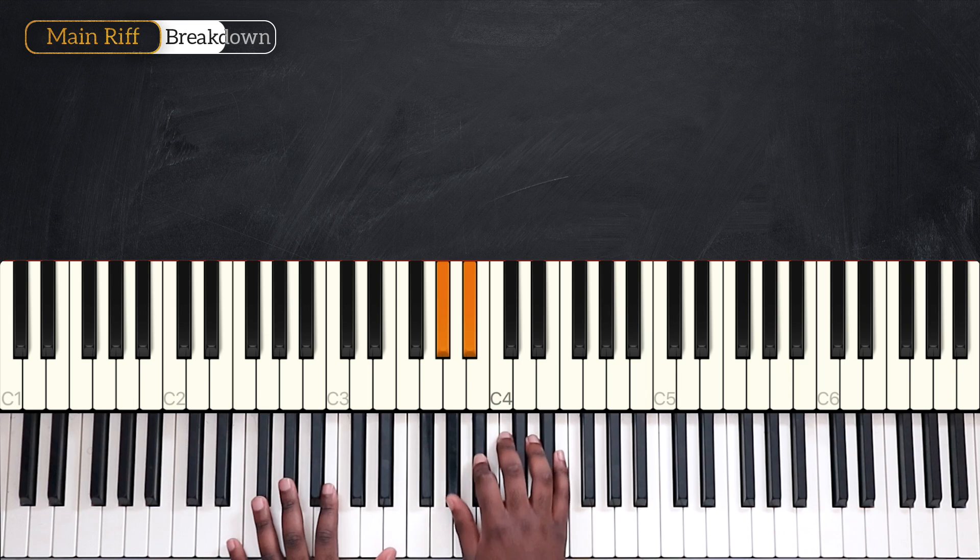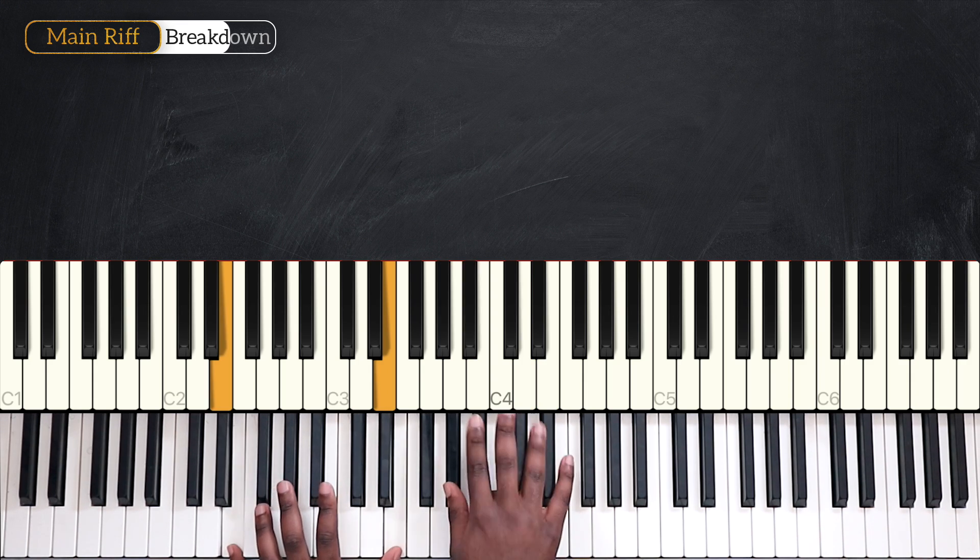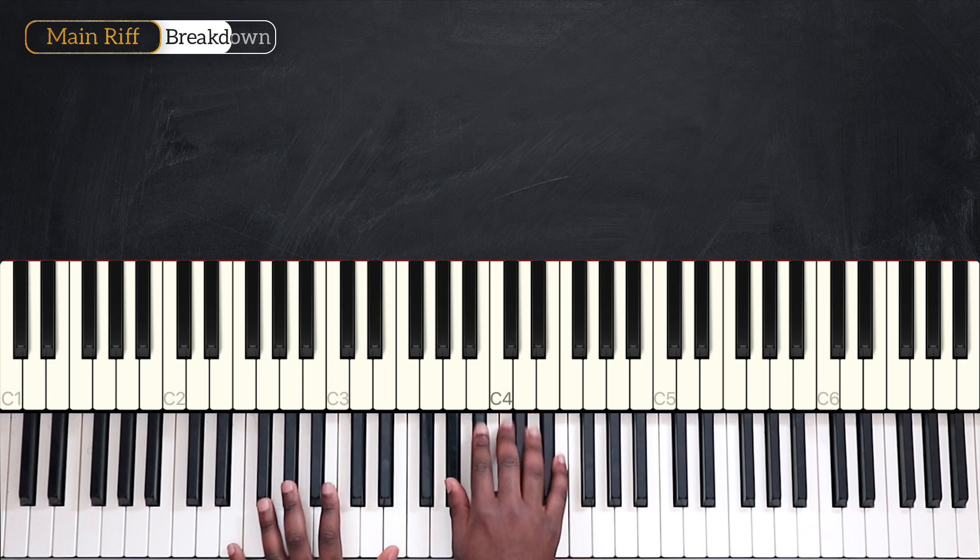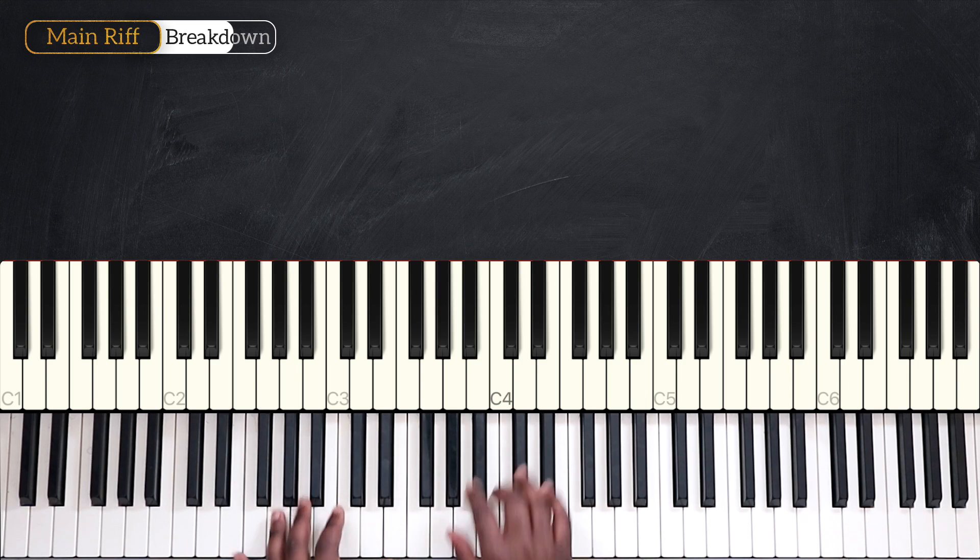And on this one, what we're going to do is play the full chord, and then we play on the right G sharp, A sharp, and change the top note to D. So we have this. So here's the first part: 2, 3, 4.